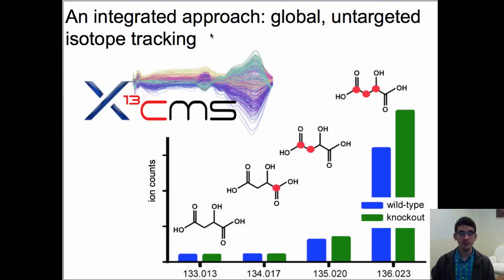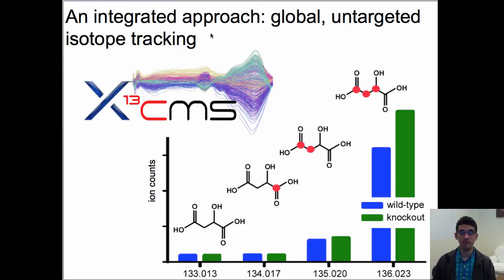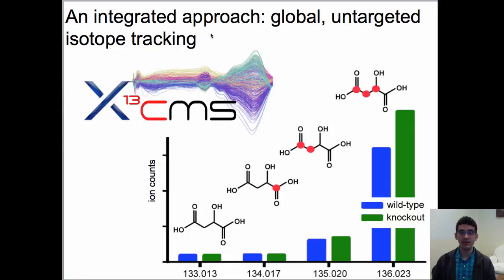A demonstration of what XC13MS accomplishes is represented on this slide. We've given cells labeled C13 glucose and asked where that label goes. In this example, XC13MS has detected that the label gets into malate. Furthermore, when we compare how much label gets into wild-type cells versus knockout cells, we can see that it varies — particularly for the last isotopomer on the far right, knockout cells incorporate or produce more triply labeled malate compared to the wild-type organism. This is an example of the XC13MS output.